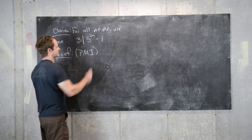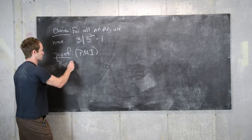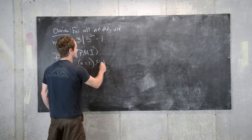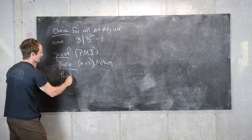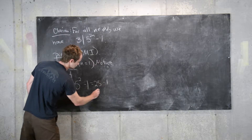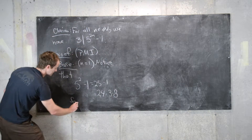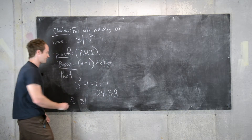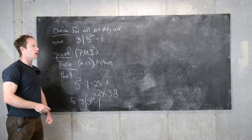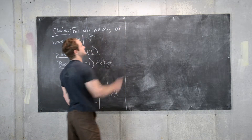We're using the principle of mathematical induction, so the first step is the base case. We check the case when n equals one: five to the two times one minus one equals twenty-five minus one, which equals twenty-four, which equals three times eight. So three indeed divides twenty-four, and our base case is satisfied, which sets up our whole induction argument.